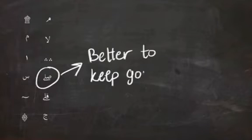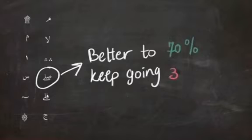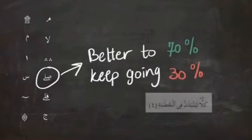Next is the symbol that looks like the word sil, and it means you better keep going. We could basically compare it to 70% go, 30% don't go, and it means that it is better to keep reading like in the example.